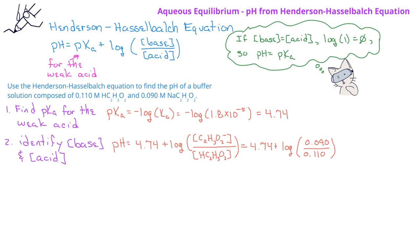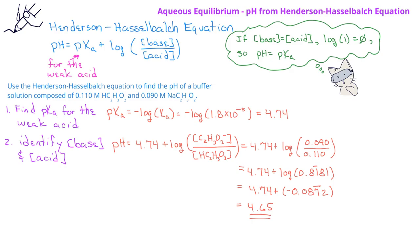This gives us pH equals 4.74 plus the log of 0.8181, which when entered in the calculator gives a pH of 4.65 for this buffer solution. This is slightly more acidic than the previous example, which had equal concentrations of acetic acid and sodium acetate. We would expect this buffer to be slightly more acidic because we have a slightly higher concentration of acetic acid and a slightly lower concentration of its conjugate base, the acetate ion.